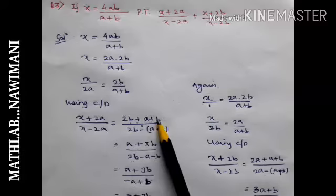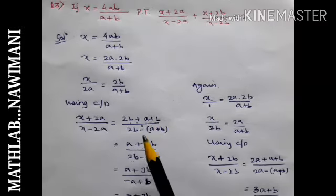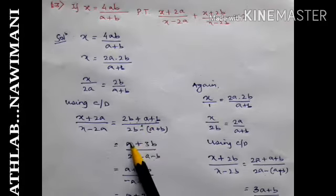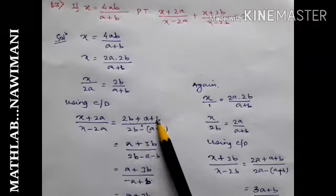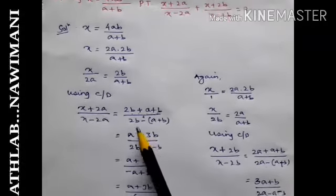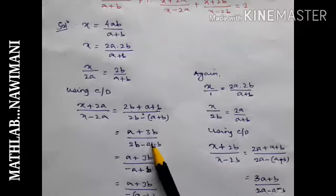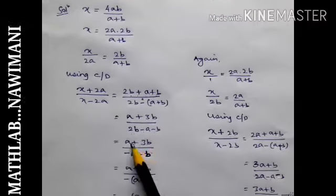Now this is 2b plus a plus b. So a I keep it here and 2b and 1b, like terms I add, 3b, sign of the bigger number. 2b minus a minus b.